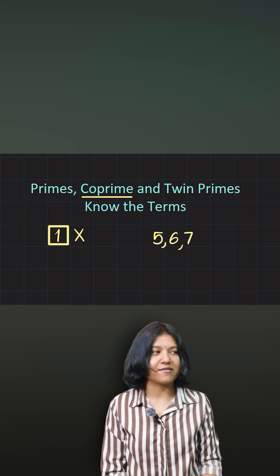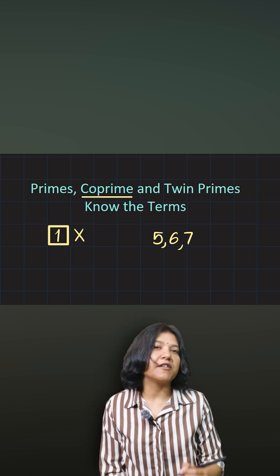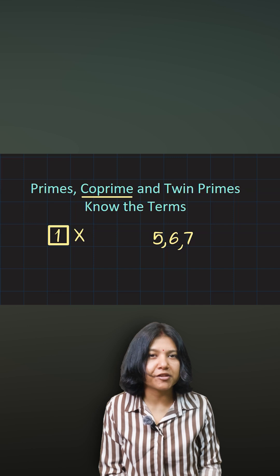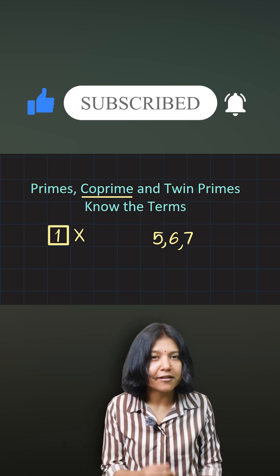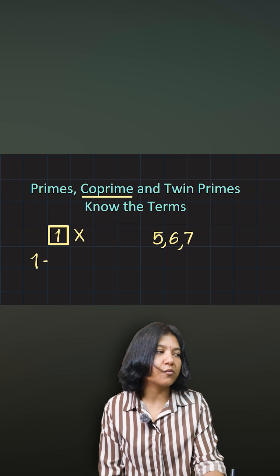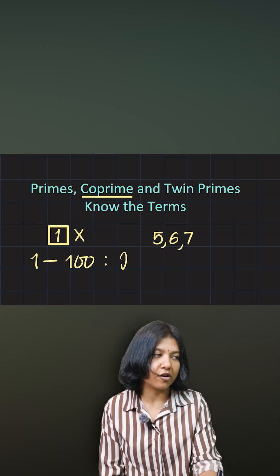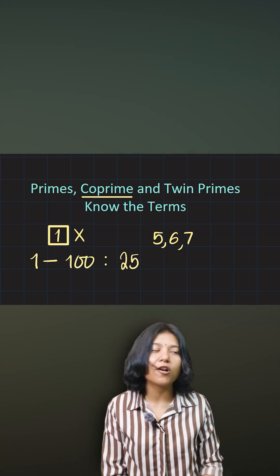There is one interesting thing I want to tell you. If you ever have to deal with a question that talks about finding the probability of prime numbers or something like that, remember between one to two hundred we exactly have 25 prime numbers.